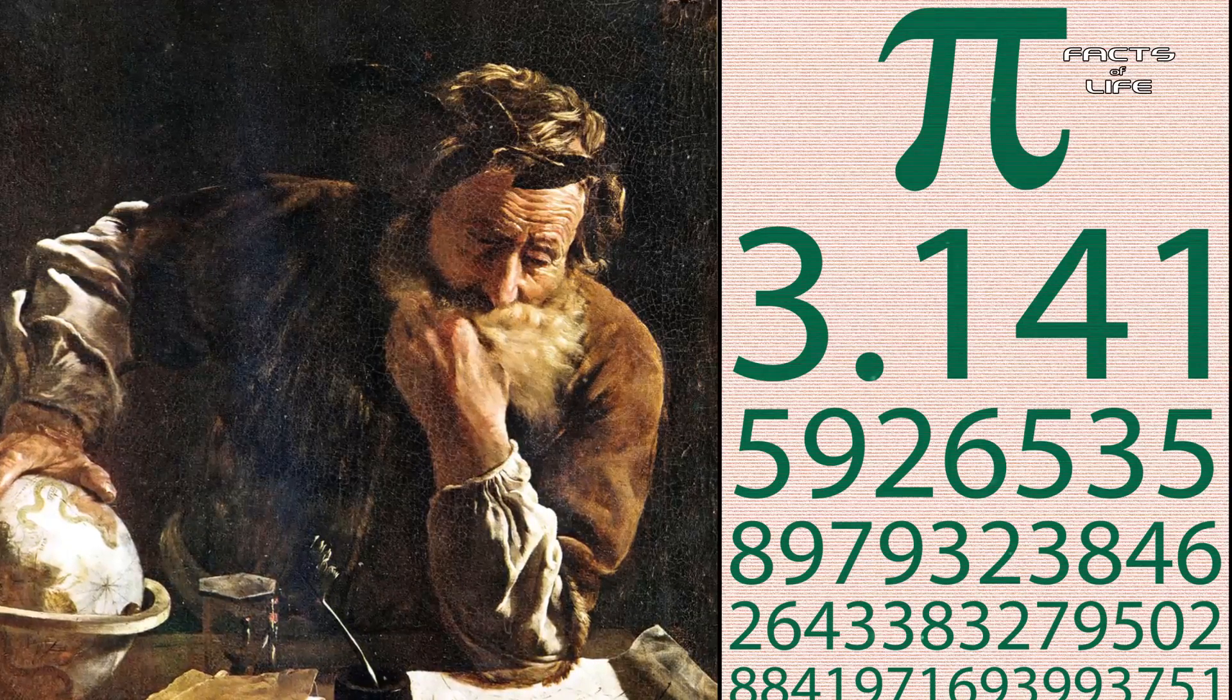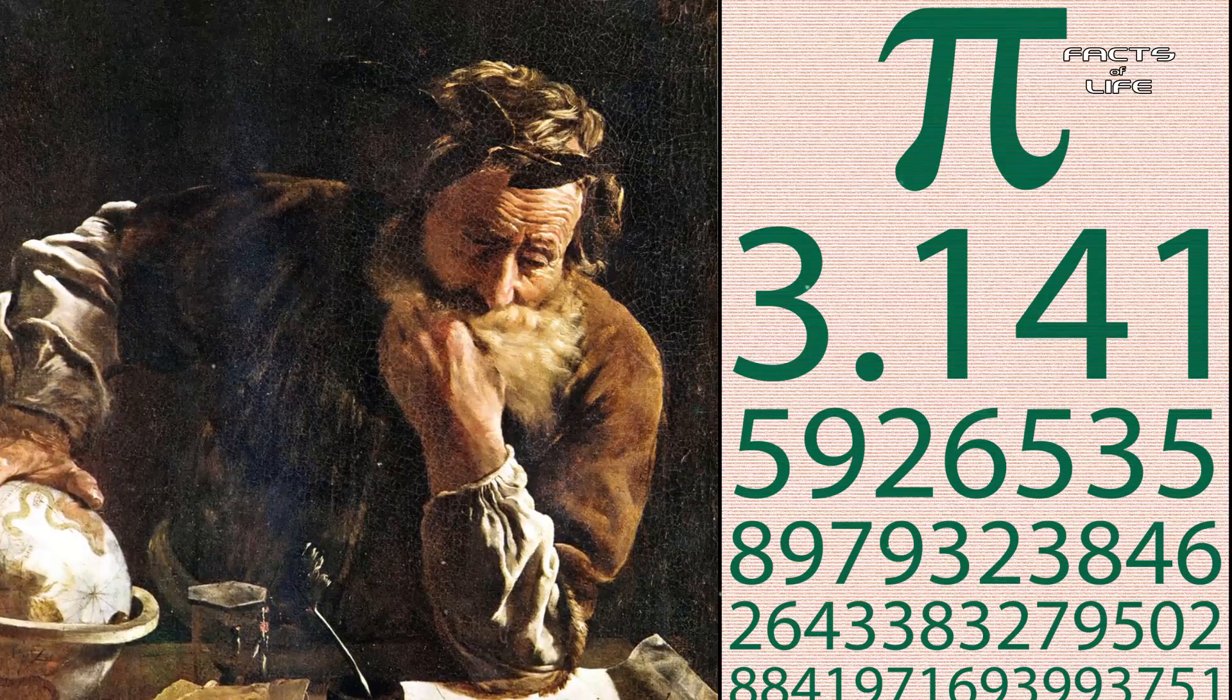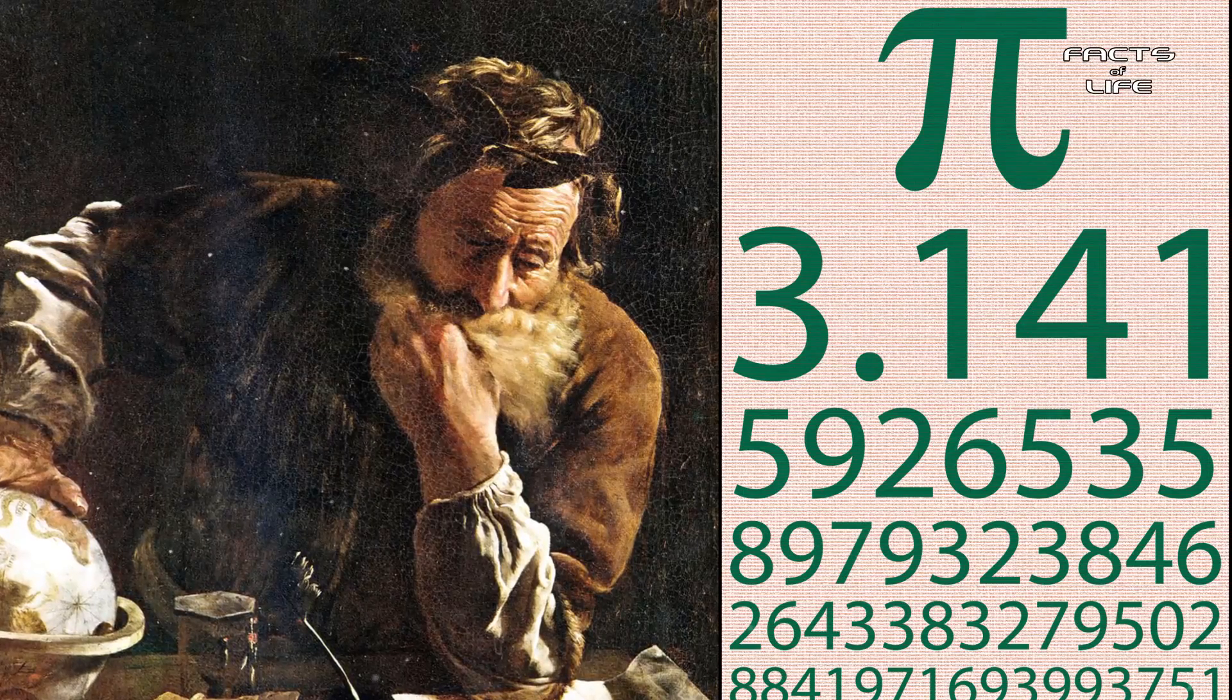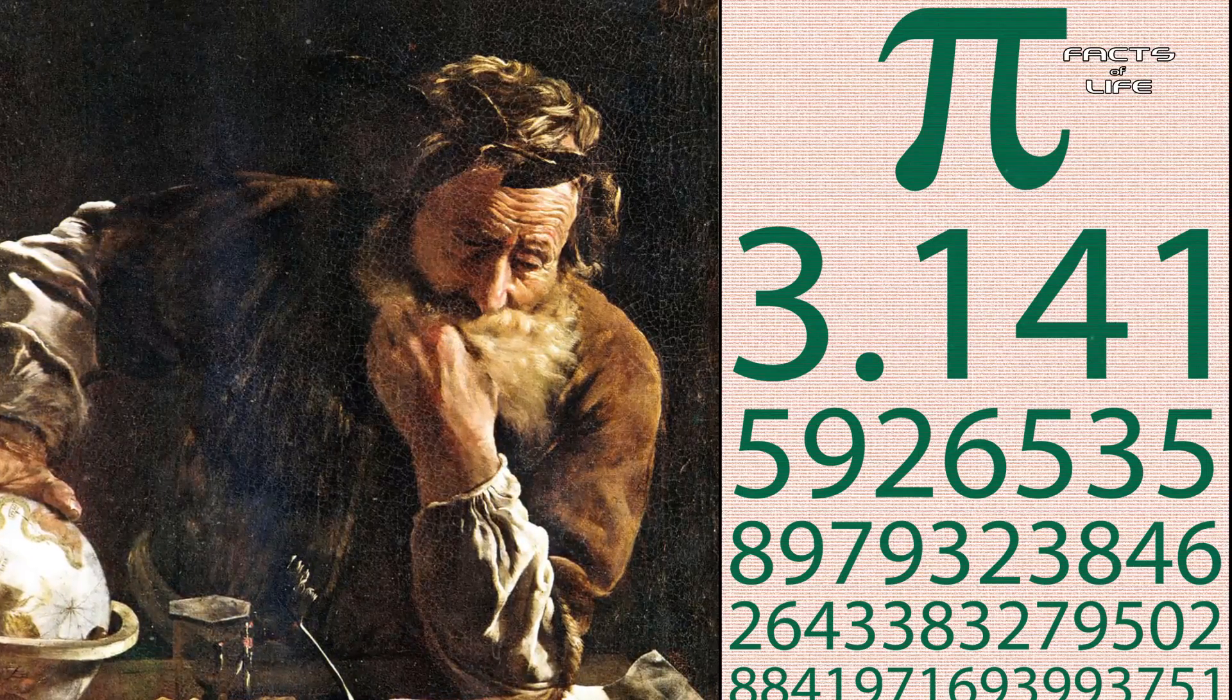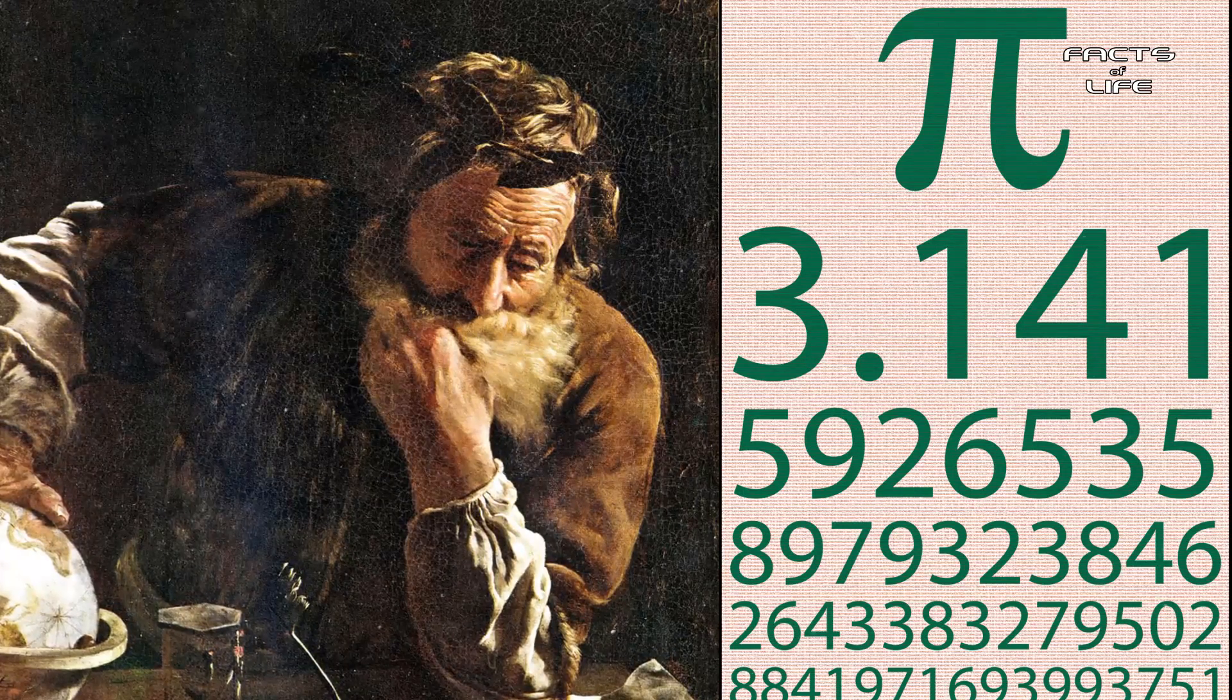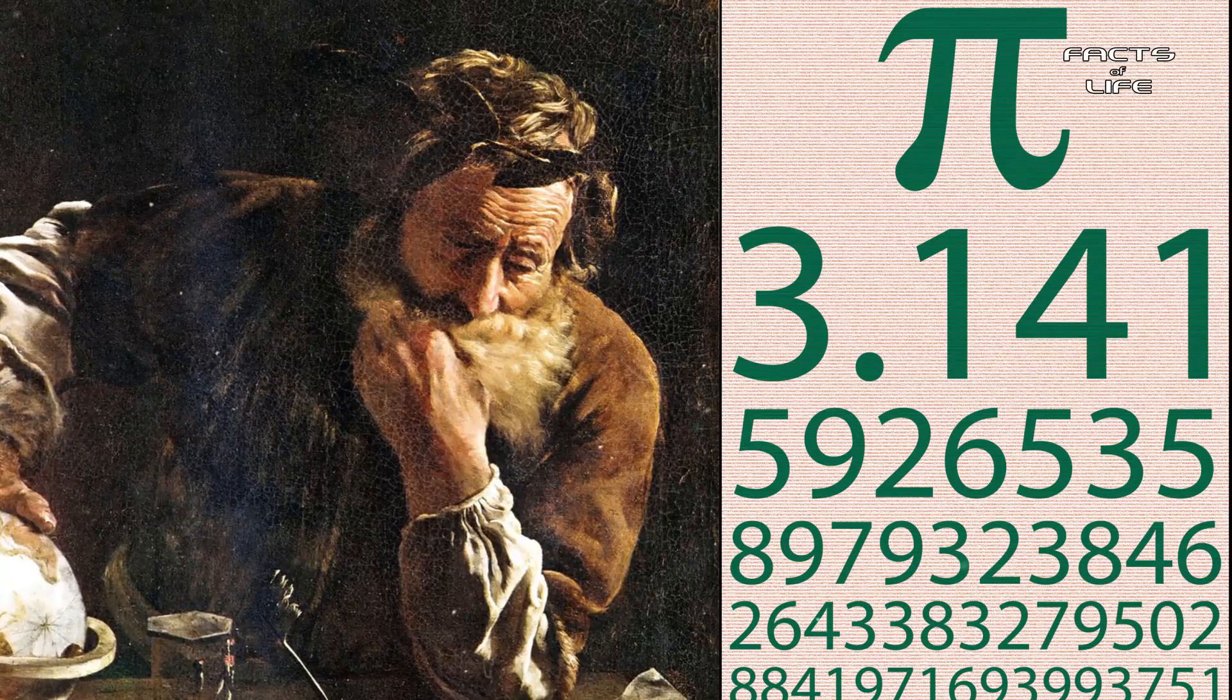The first calculation of Pi is believed to have been obtained by Archimedes of Syracuse around 220 BC. Archimedes derived the formula A equals Pi R squared by approximating the area of a circle based on the area of a regular polygon inscribed within the circle, and the area of a polygon within which the circle was circumscribed.